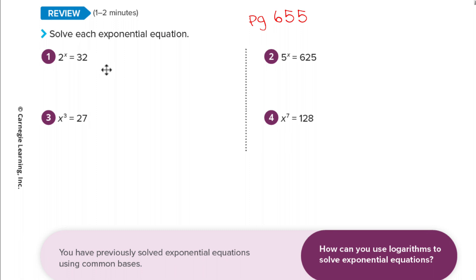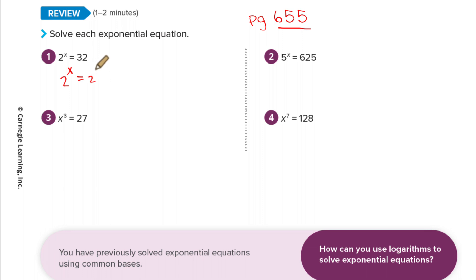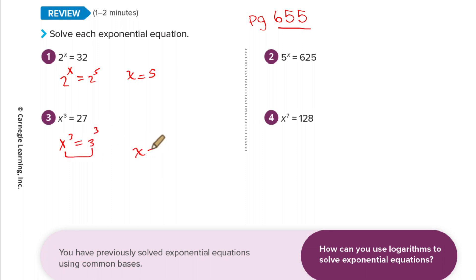Let's start with a little bit of review on page 655 — the change of base stuff we've done in the past. For number one: 2 to the x equals 32. We write it with a common base: 2, 4, 8, 16, 32 — that's 5 of them, so x equals 5. For number 3: x cubed equals 27, and since 27 is 3 cubed, the bases must be the same, so x equals 3.